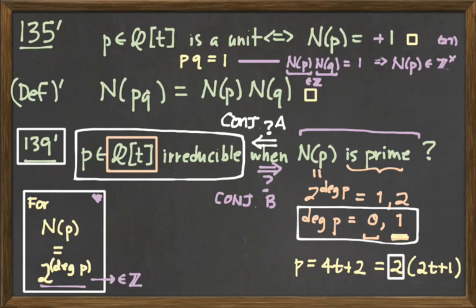Alright, what's an example of an irreducible polynomial that doesn't have a prime norm? T squared plus 5 is irreducible over the rationals, but its norm is equal to 4. So, conjecture B is false. But think about conjecture A over the weekend. And we'll pick up with that and talk about irreducibility of cubics on Tuesday.